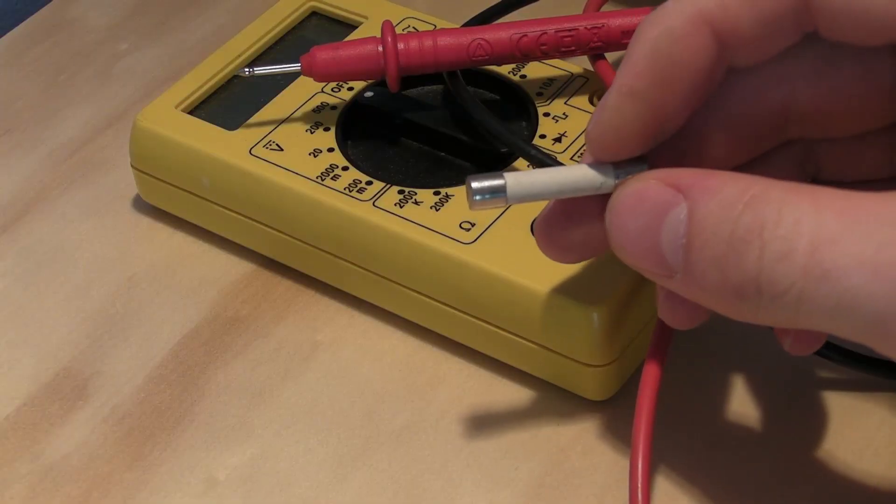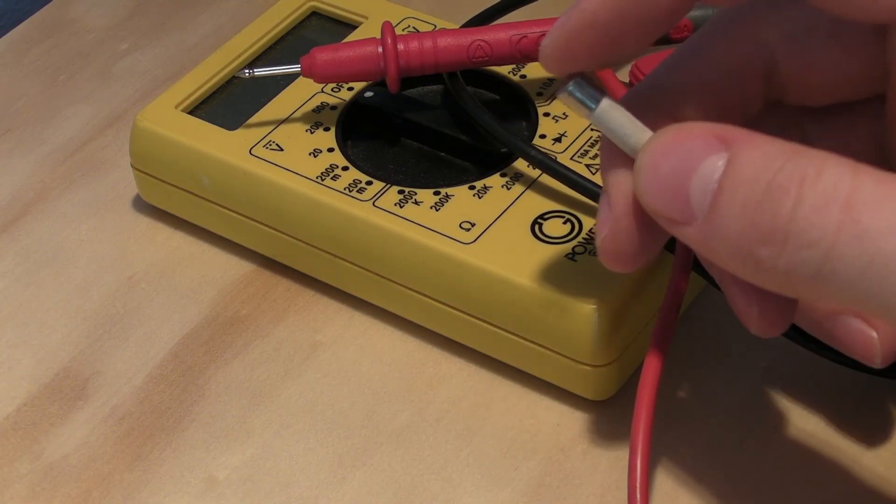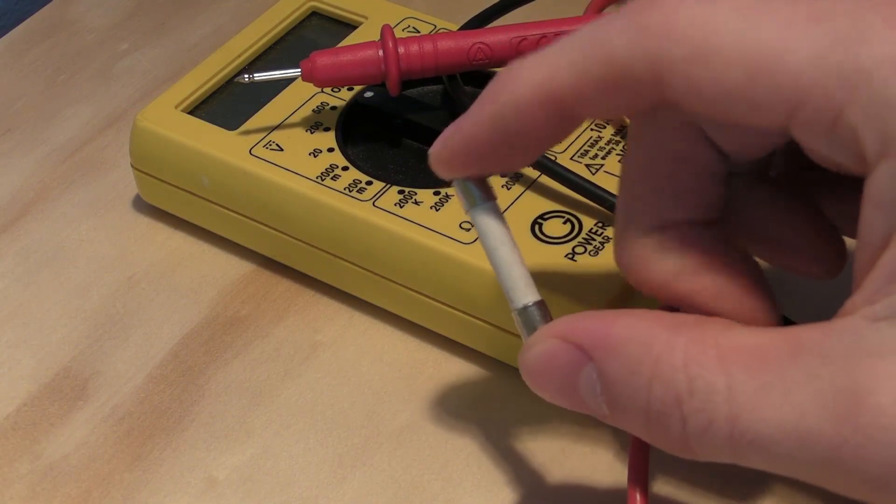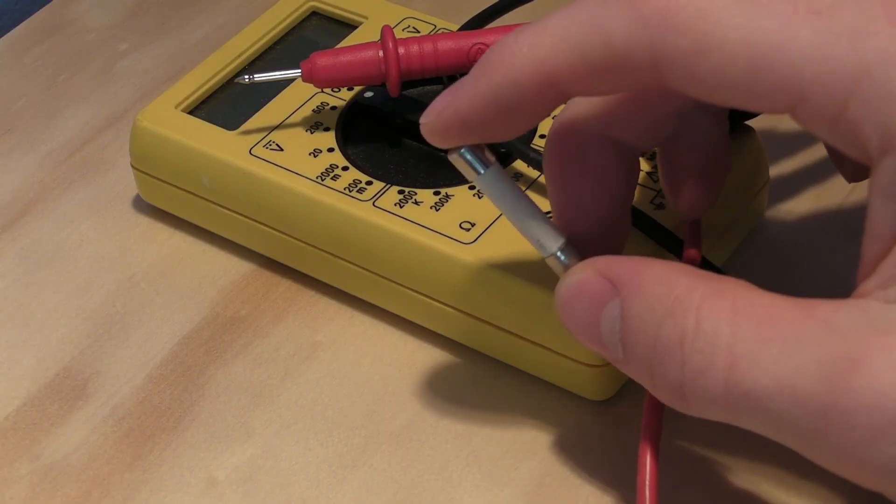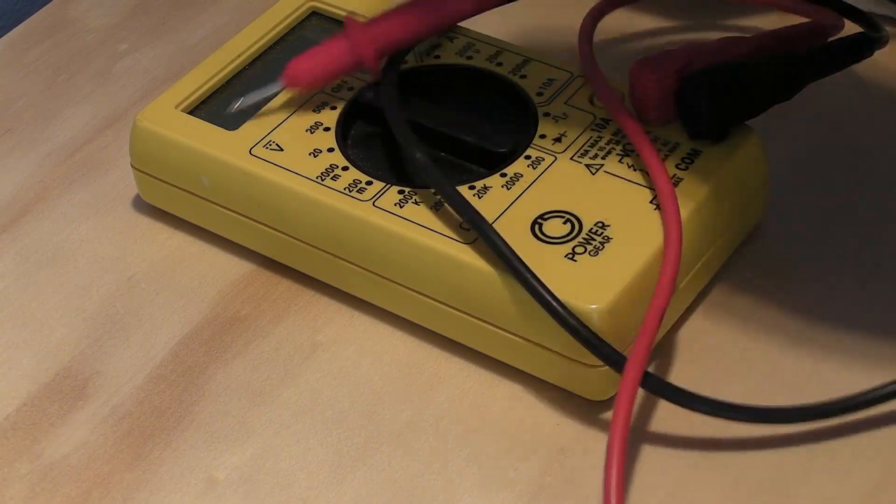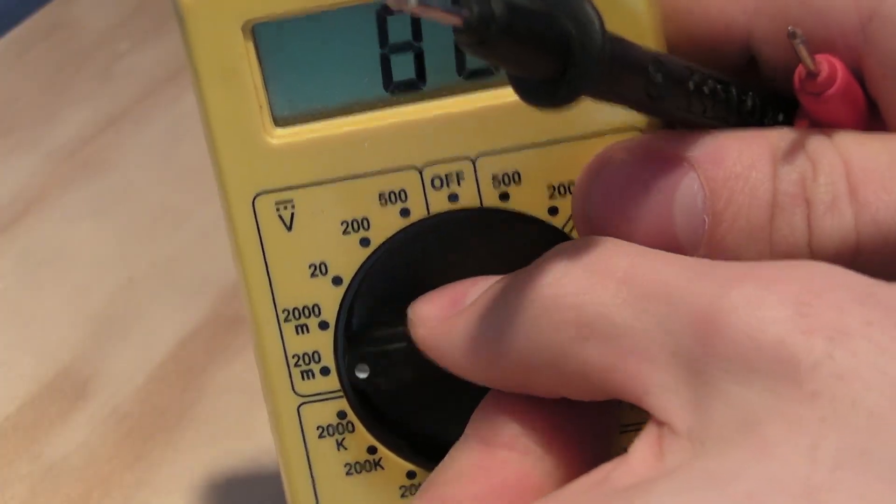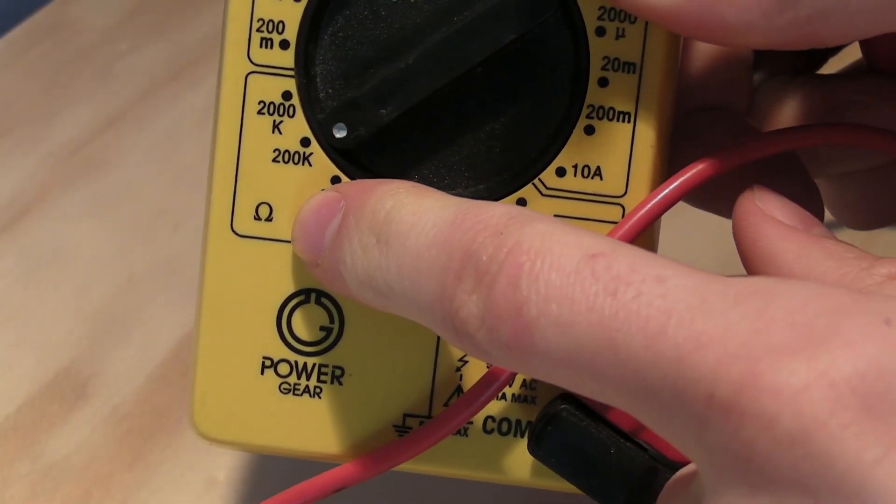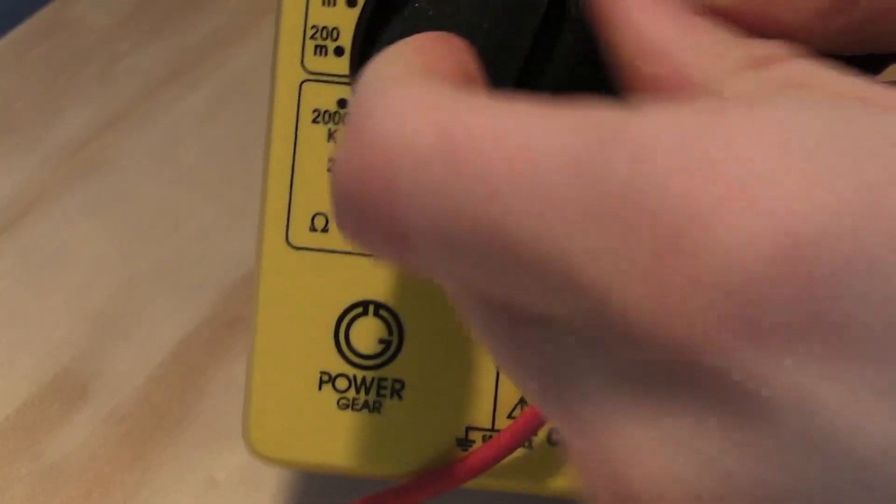So after you pull the fuse, if one of your channels still works, pull the channel that doesn't work, it should be labeled on the circuit board, channel A and B, or 1 and 2. Pull the fuse for the channel that doesn't work, and you're going to want to get your multimeter just to check that this fuse is actually blown. We're going to set this to resistance here. This little icon means ohms, and any of these will work for what we're doing.